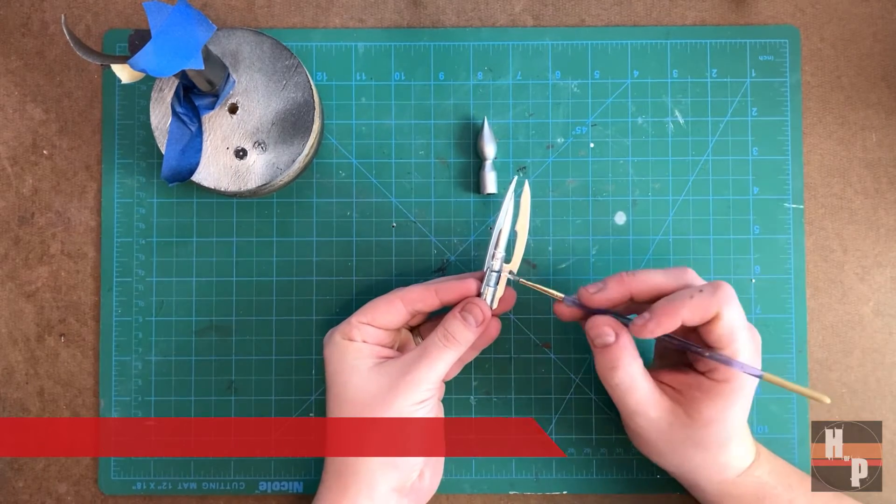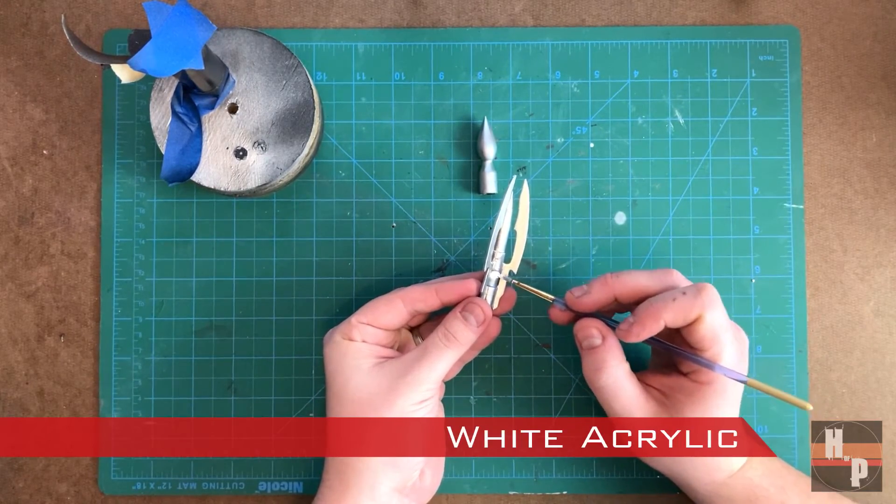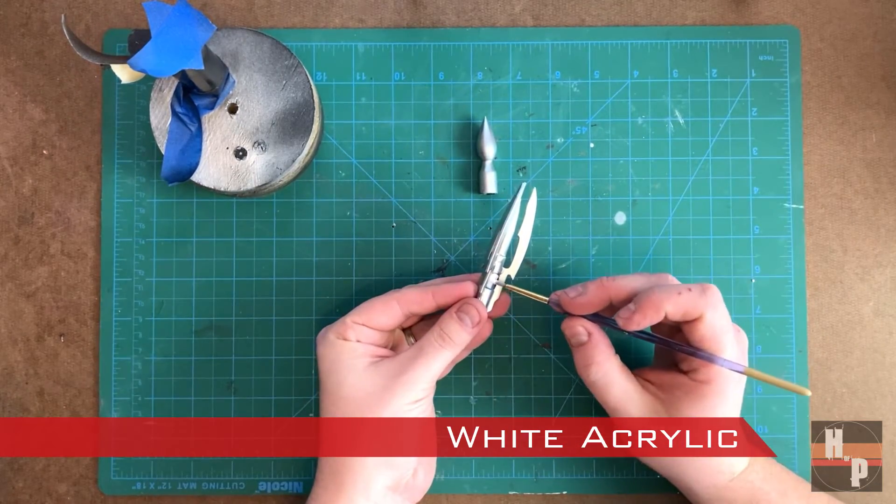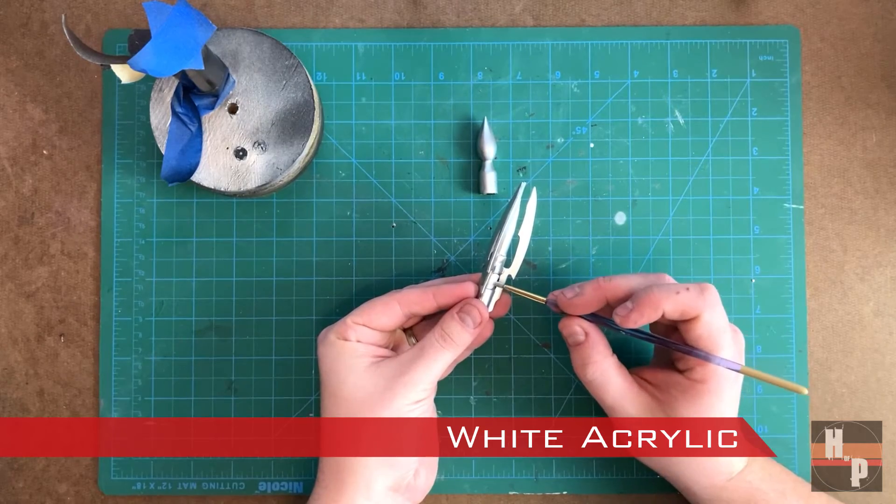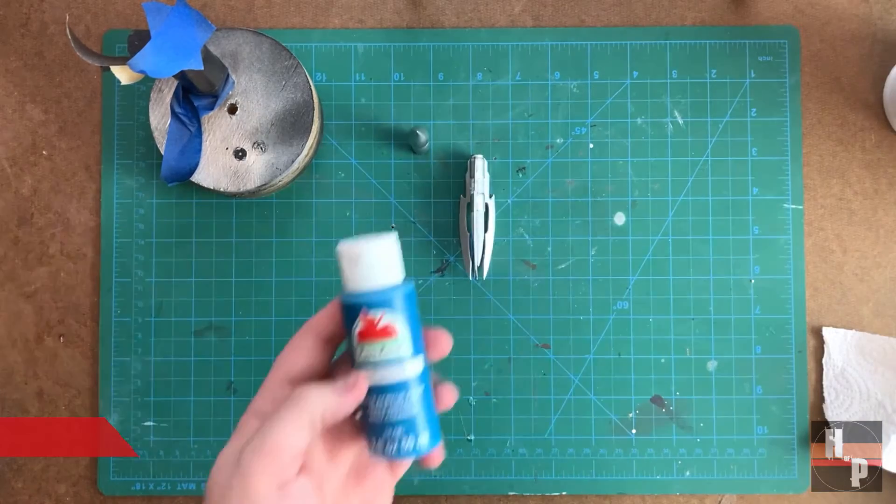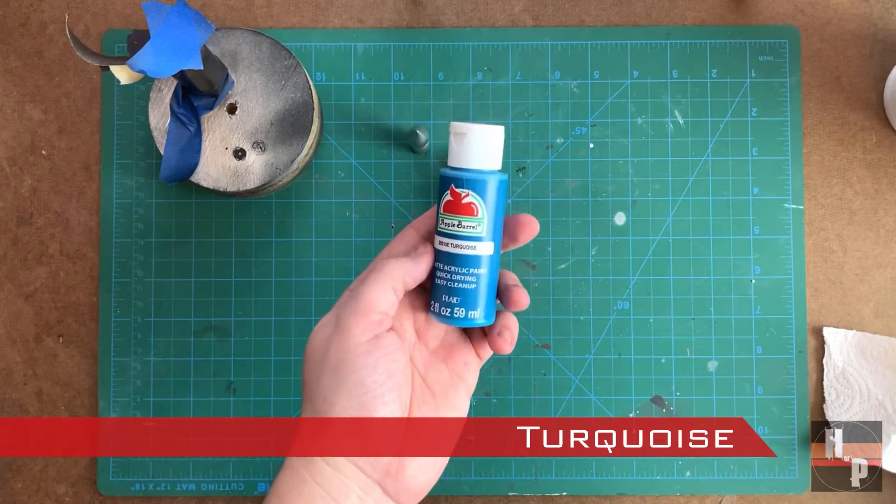To begin, I painted the vial with a white acrylic. Once the white dried, I then used turquoise blue.